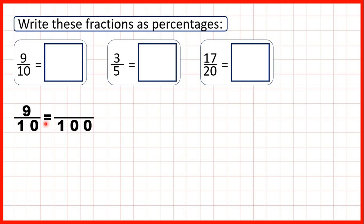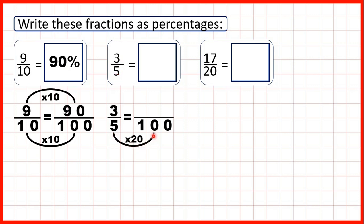To find equivalent fractions we use multiplication. 10 times 10 is 100, and what we do to the denominator we need to do to the numerator as well. 9 times 10 is 90, so because 9 tenths is equivalent to 90 hundredths, that's the same as 90 percent.